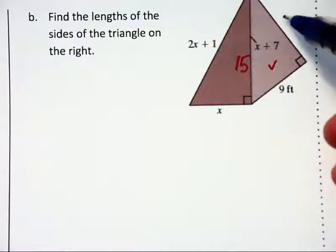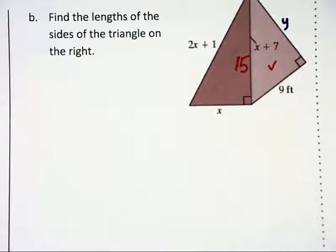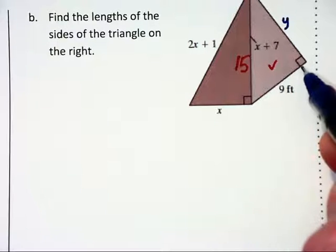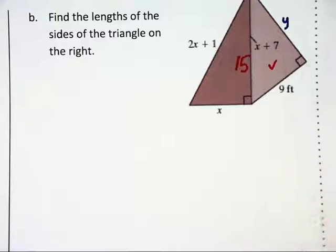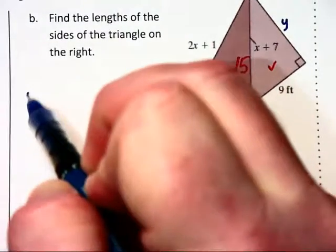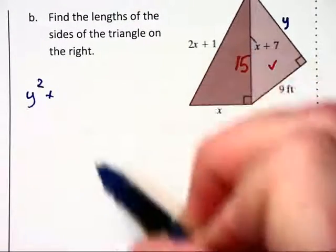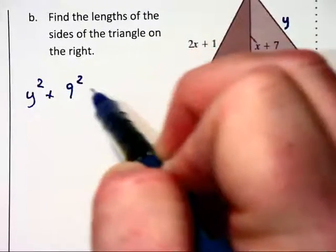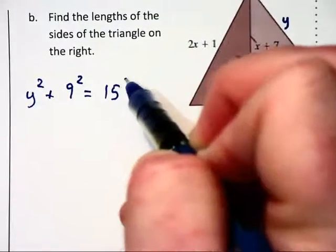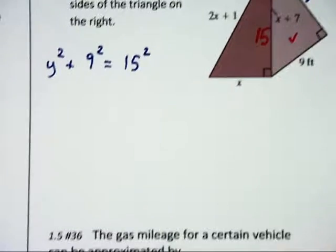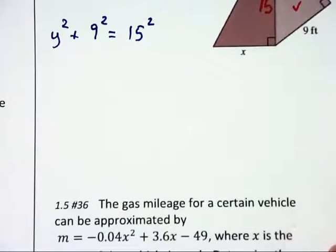Now they want us to find this missing side, which I will call y. Because we have a right triangle yet again, we can use the Pythagorean theorem and say y squared plus 9 squared equals 15 squared.